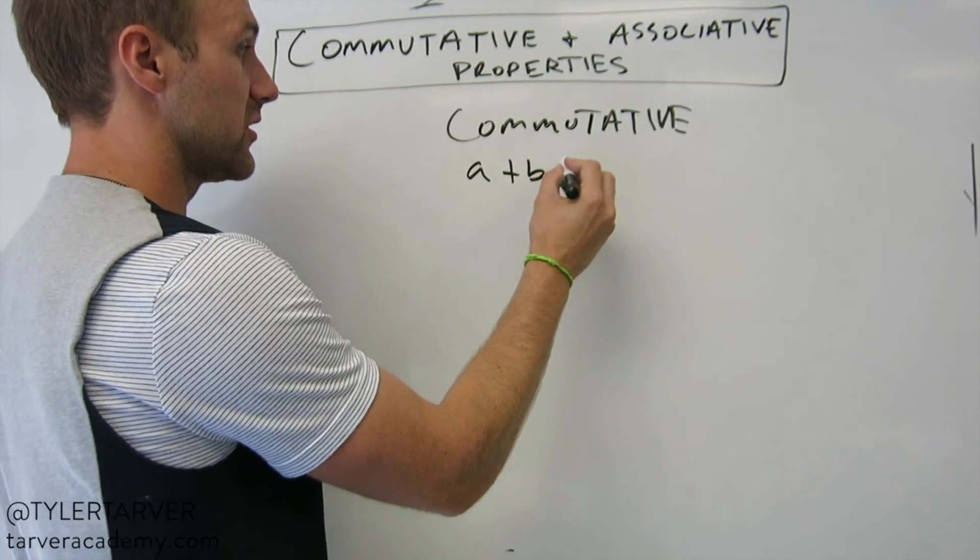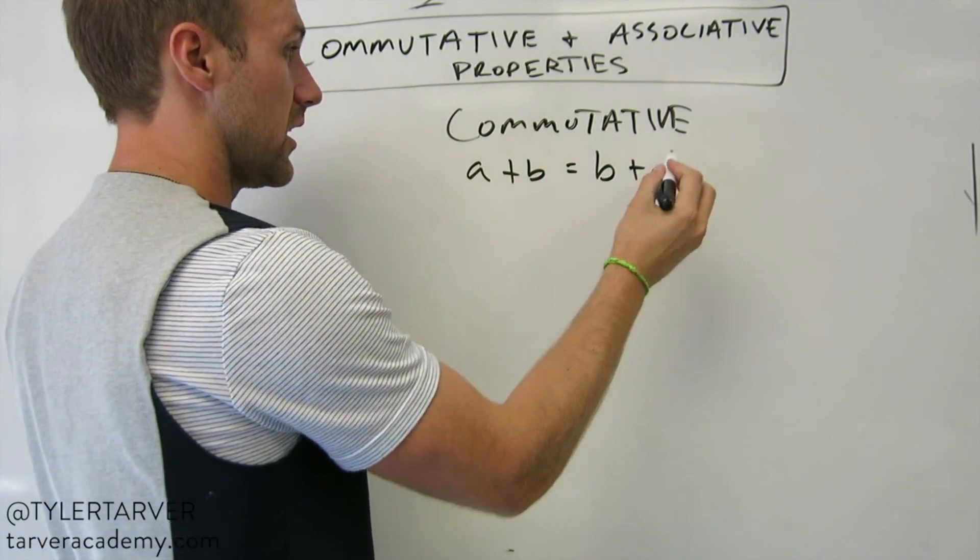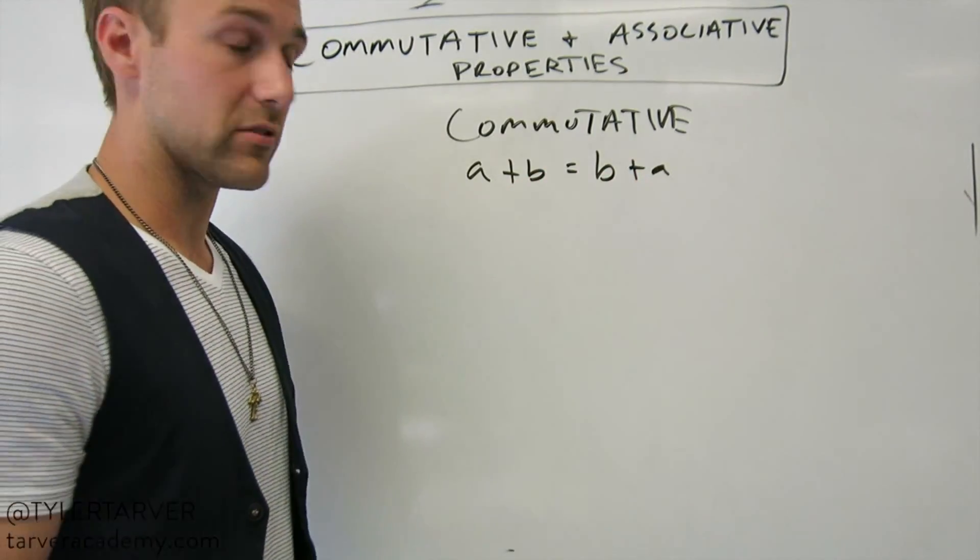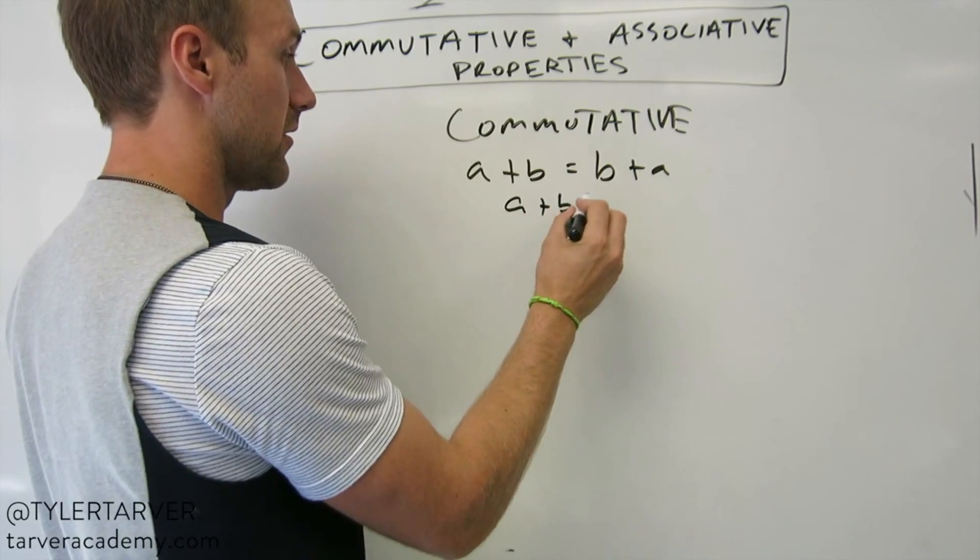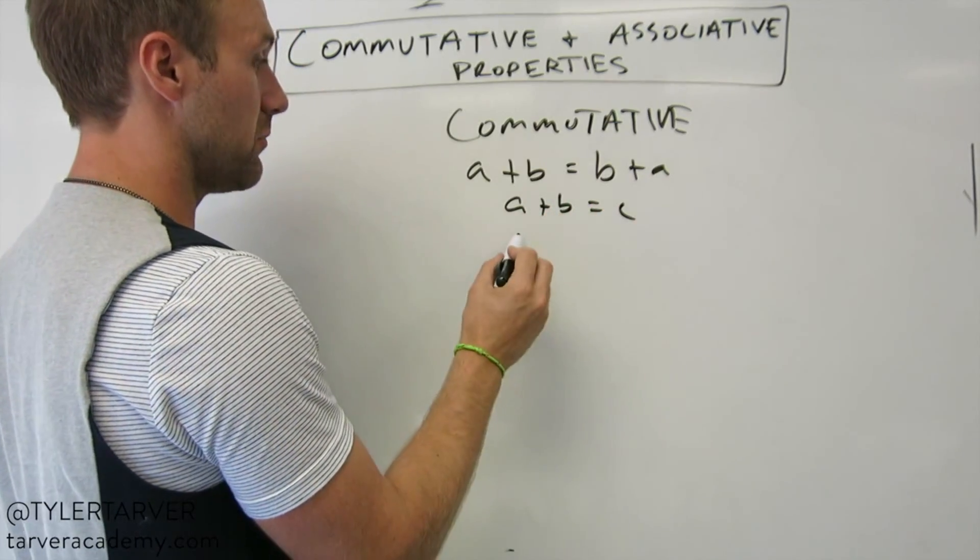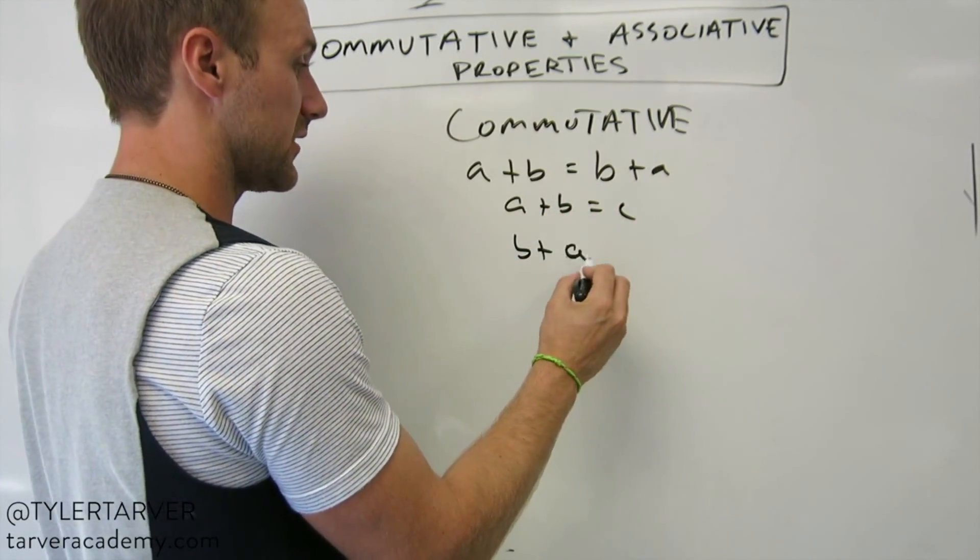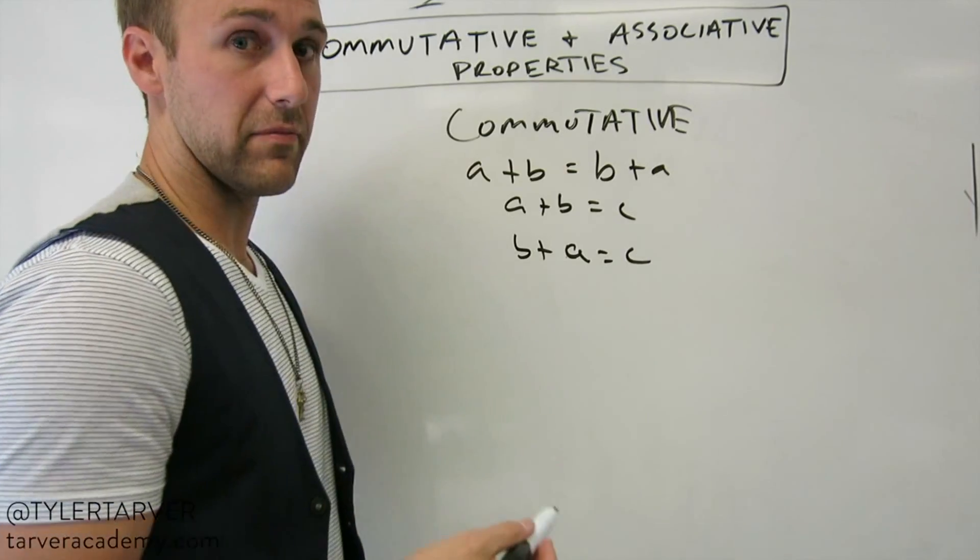Add numbers in any order and you still get the same answer. So if you do a plus b equals c, well then you can also do b plus a and that's gonna equal c. All right, that's commutative.